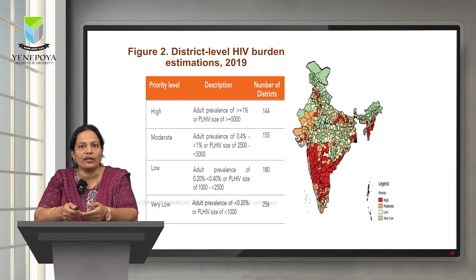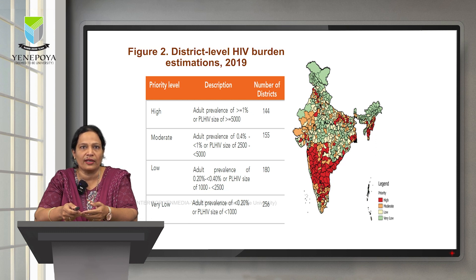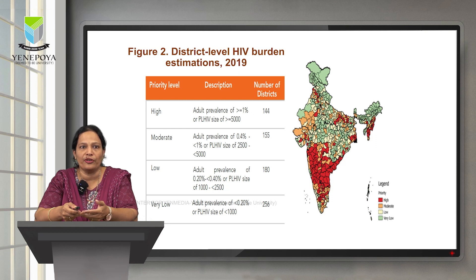This figure shows the district distribution as per the HIV burden estimations in the year 2019. The red color districts belong to the high priority level, which have an adult prevalence of more than 1% or PLHIV size of greater than or equal to 5000 — almost 144 districts. The moderate burden districts have adult prevalence of 0.4 to 1 or PLHIV size of 2500 to 5000. Low prevalence yellow districts have adult prevalence of 0.2 to less than 0.4 and PLHIV size of 1000 to less than 2500. The remaining light green districts are very low prevalence. Understanding district level HIV burden estimations helps identify high risk areas, understand high risk behaviors, and accordingly plan interventions.